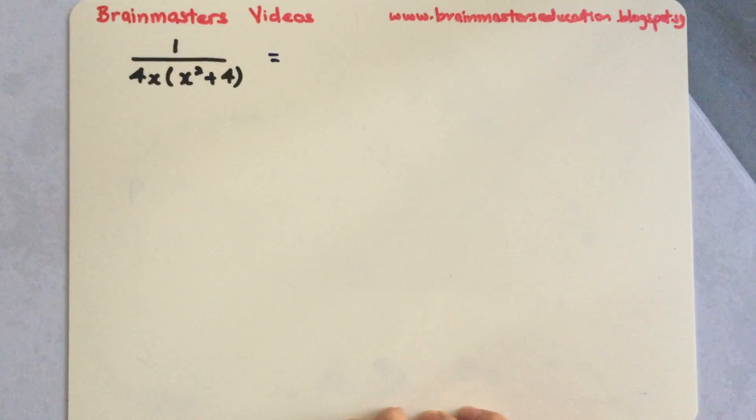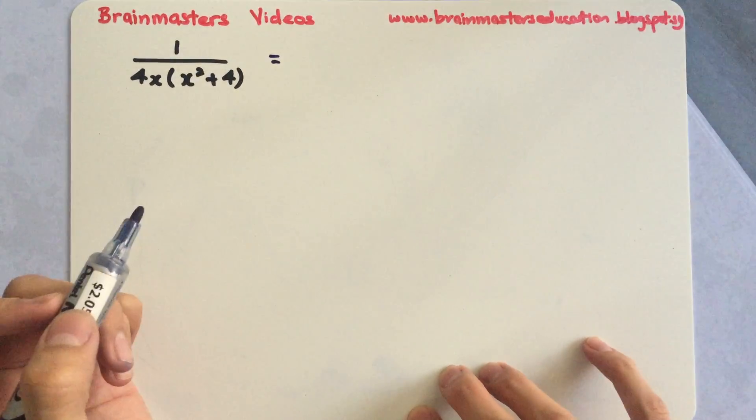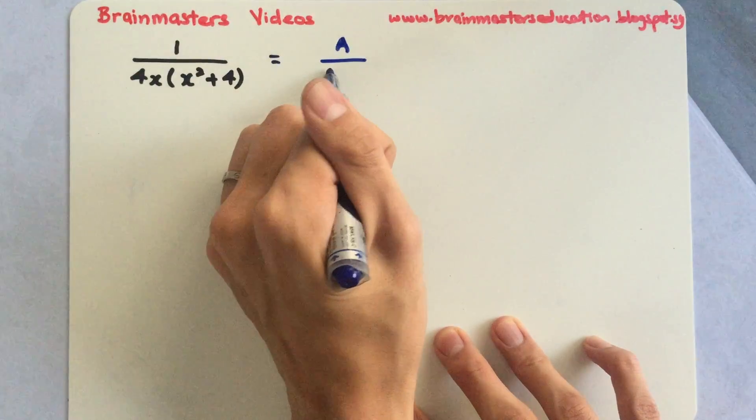So this is the question: 1 over 4x multiplied to x squared plus 4. What we need to do is separate them into 2 different fractions. First over here, we will have A over 4x